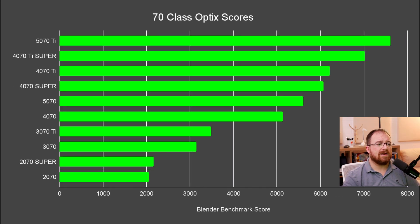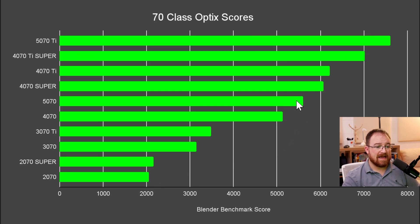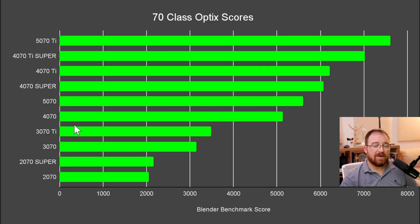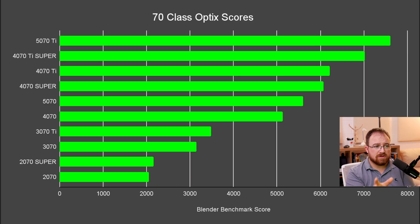Let's have a quick look at the 70-class cards themselves. Zooming in, we can see the 5070 Ti is ahead of everything, and the 5070 is in fifth position of all the 70-class cards. We've got such a mixture of cards here with Supers and TIs, so it can get a little confusing — but I'll leave this on screen so you can pause and have a look in your own time.